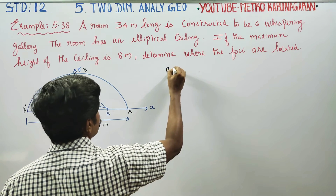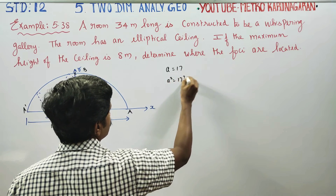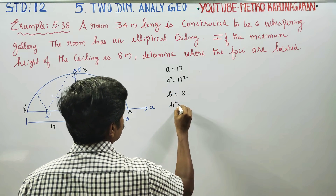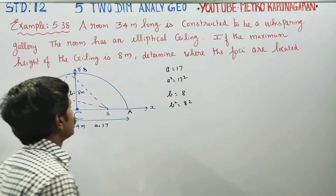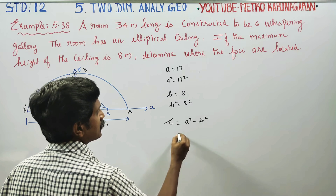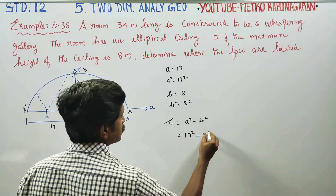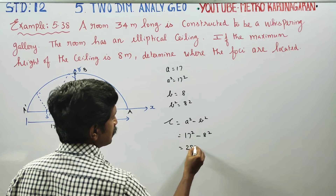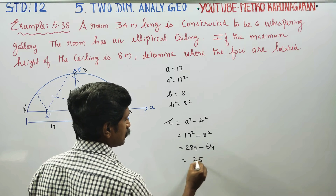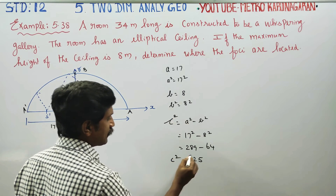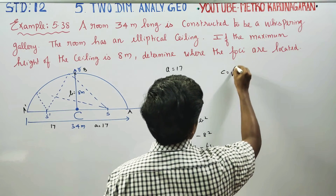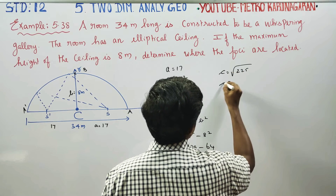So a is equal to 17, and a squared is equal to 17 squared. b is equal to 8, and b squared is equal to 8 squared. To find small c: c squared equals a squared minus b squared, which is 17 squared minus 8 squared = 289 minus 64 = 225. Therefore c is equal to the square root of 225, so c equals 15.